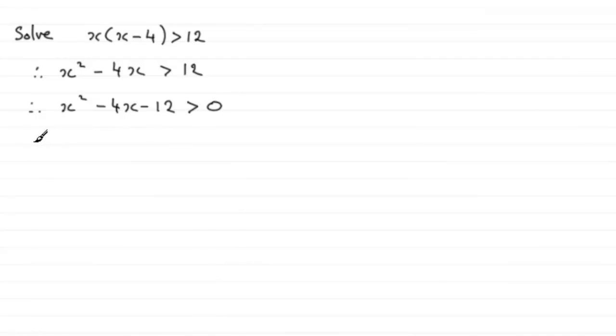At this stage I'd want to factorize it. So we're going to have two brackets, and then we've got the greater than zero there. And so what it's going to have to be is an x and an x and then a minus 6 and a plus 2.